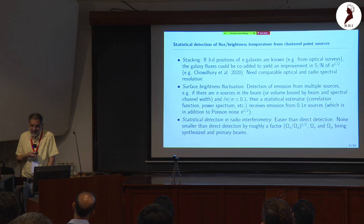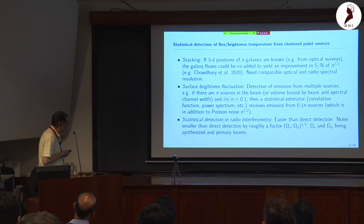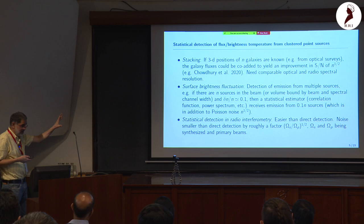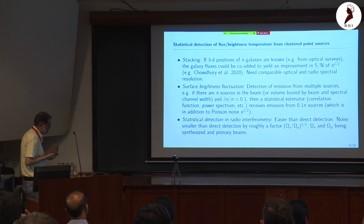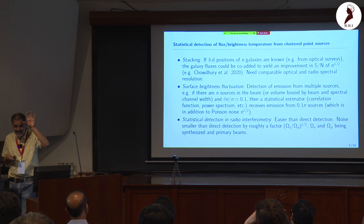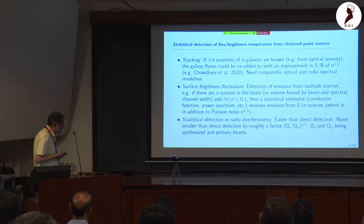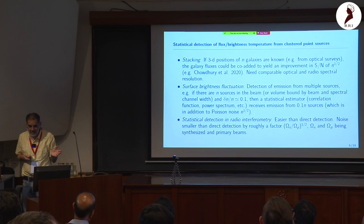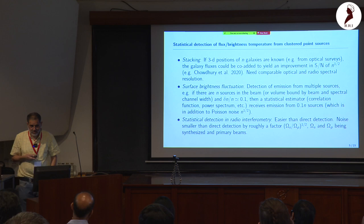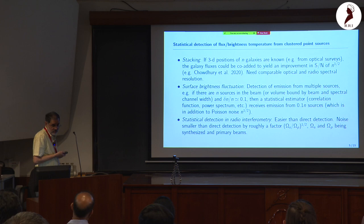The second method is surface brightness fluctuations, also called intensity mapping. Instead of knowing the 3D position of each galaxy, you detect emission from multiple halos. With a large beam — like GBT — if there are multiple clustered sources and the density perturbation is around 0.1, you get net emission from about 10% of sources within the beam. Poisson fluctuations are always present, and it is possible to detect the signal using Poisson fluctuations alone.